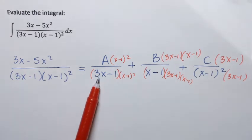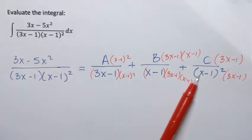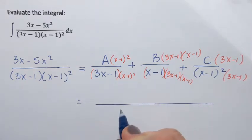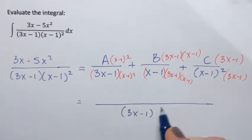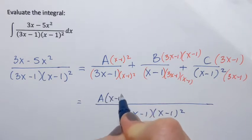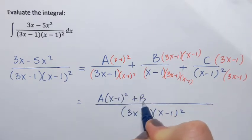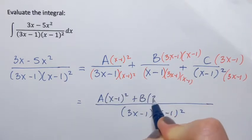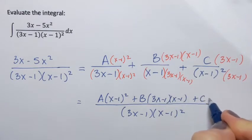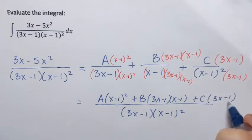This creates the same denominator, so I'm ready to combine all the fractions. The denominator is (3x minus 1)(x minus 1) squared. The numerator is A(x minus 1) squared plus B(3x minus 1)(x minus 1) plus C(3x minus 1).